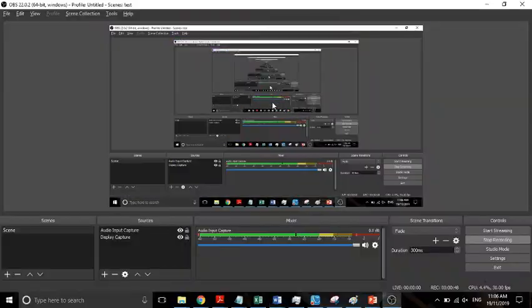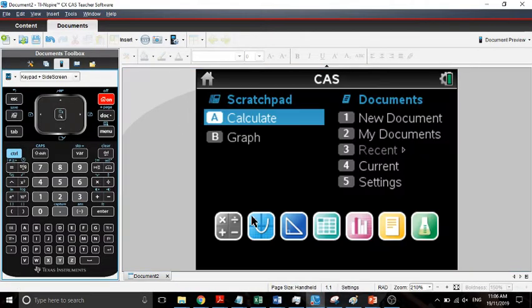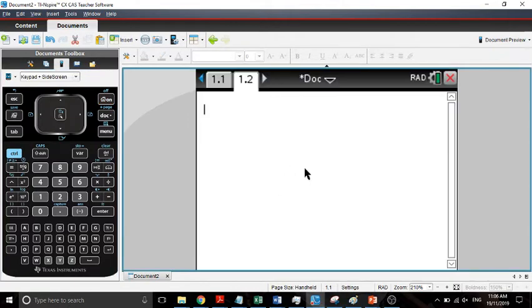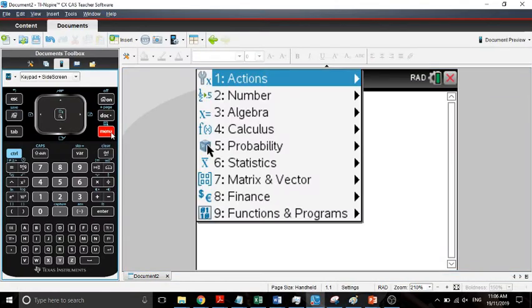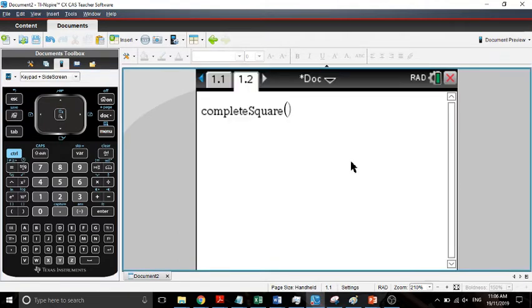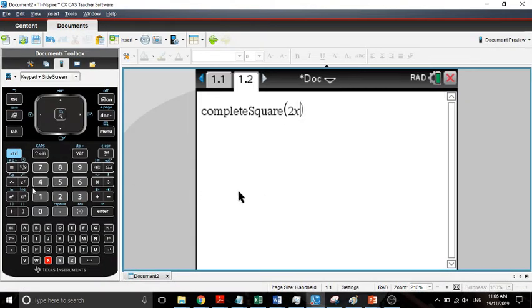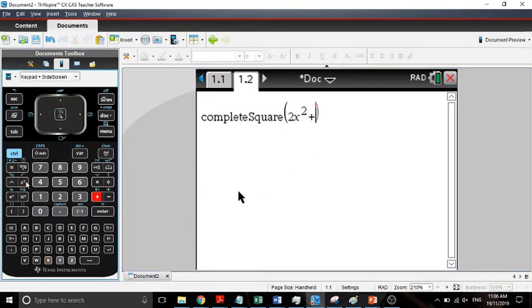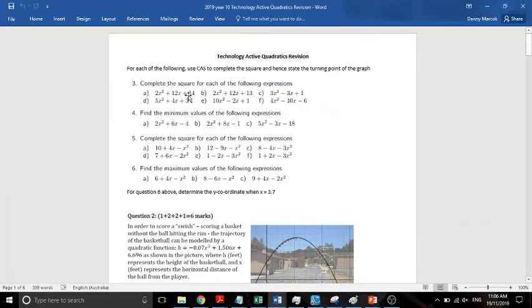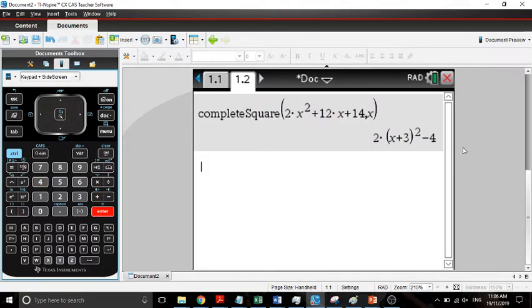So we're going to complete the square. We're going to fire up CAS and we're going to press our calculator button. Now we're going to go to menu, algebra, complete the square. And then here we're going to type in our equation: 2x squared plus 12x plus 14. And we're going to say comma x, close my brackets, and press enter. And there it completes the square for me.